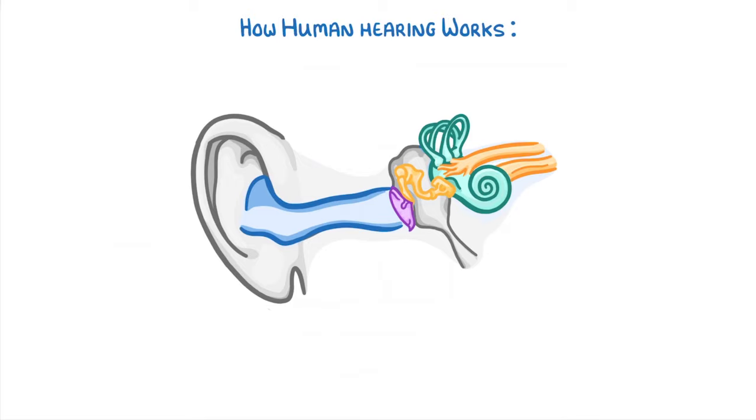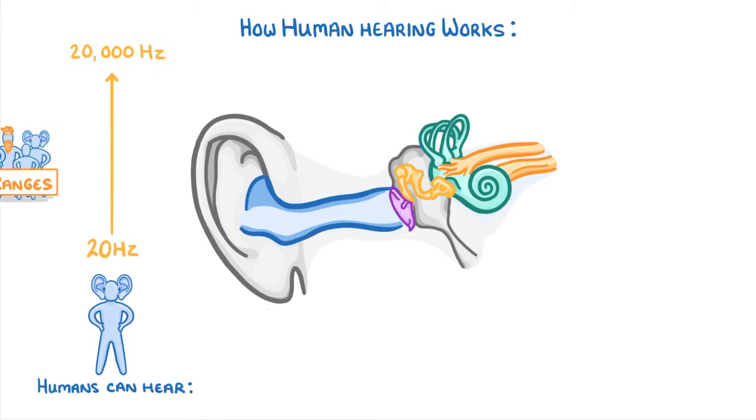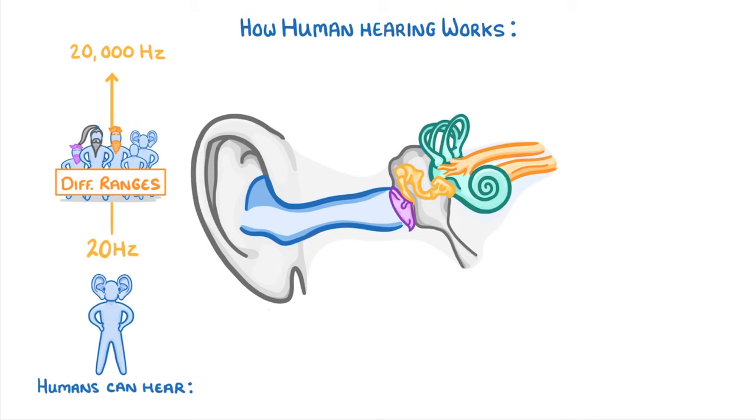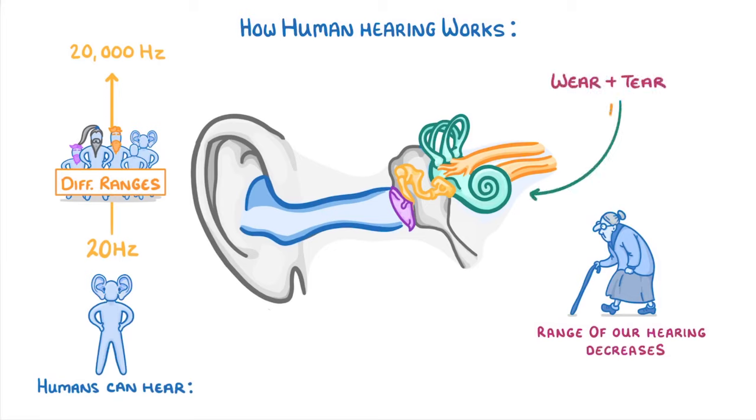The size and shape of all of these structures determines which frequencies we can hear. In general, humans can hear frequencies ranging from 20 hertz to 20,000 hertz, but different people will have slightly different hearing ranges, and as we get older, the range of our hearing normally decreases, mostly because of wear and tear of the cochlea and auditory nerve.